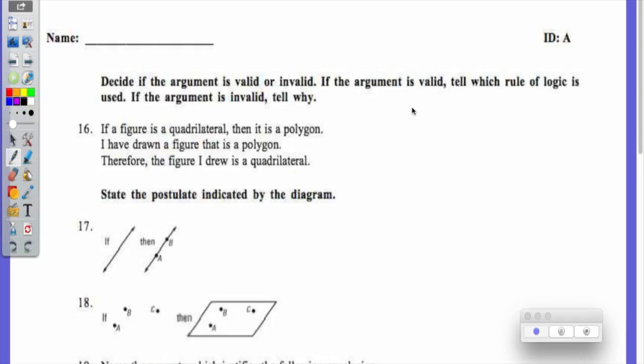For number 16, if a figure is a quadrilateral, then it is a polygon. I have drawn a figure that is a polygon. Therefore, the figure I drew is a quadrilateral. Is that valid or invalid? Invalid because you can draw a triangle. Perfect. It's invalid because you could draw a triangle. So where it says if it's valid, which law did you use? You didn't use a law of logic because it's invalid.